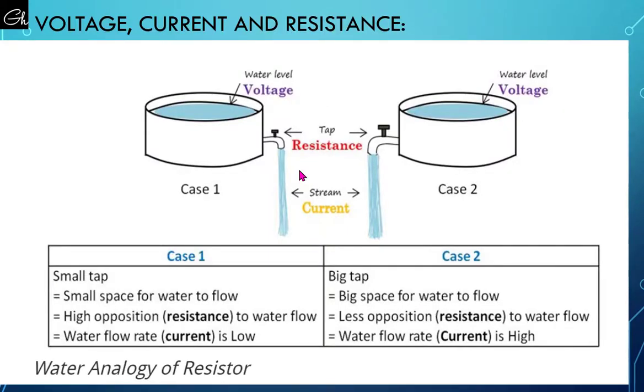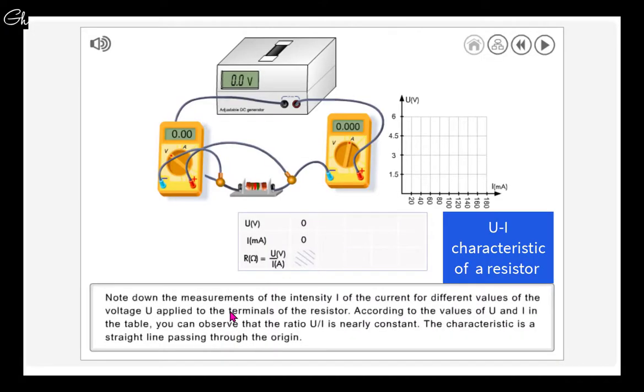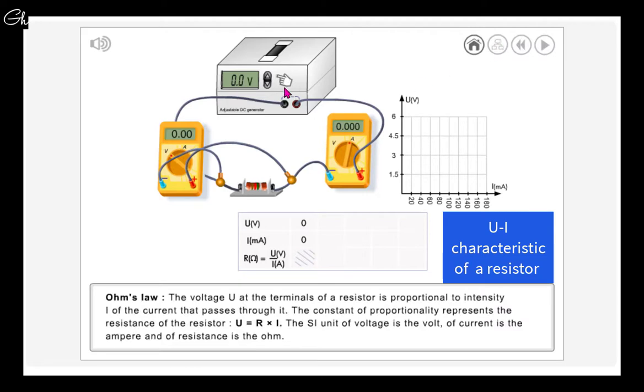Depending on Ohm's law, voltage and current are proportional while resistance and current are inversely proportional. So if we increase the resistance, the flow of current will decrease.